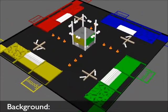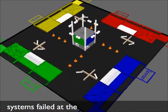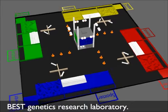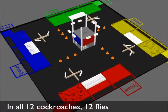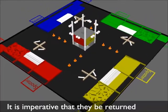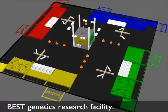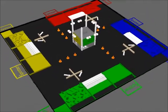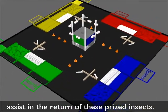Background: Yesterday three of the insect containment systems failed at the Best Genetics Research Laboratory. In all, 12 cockroaches, 12 flies, and 16 termites have escaped. It is imperative that they be returned unharmed to the Best Genetics Research Facility. Your mission is to design a robot that will assist in the return of these prize insects.